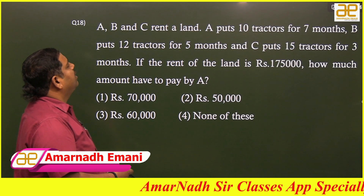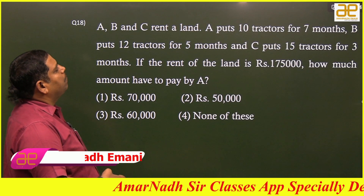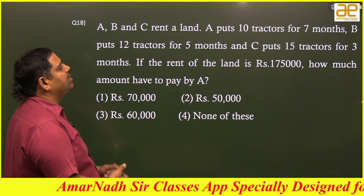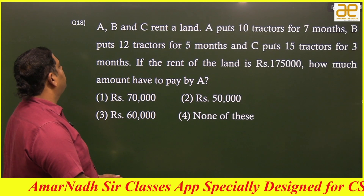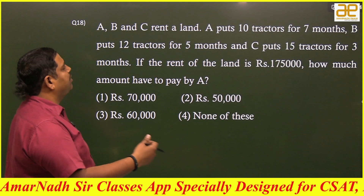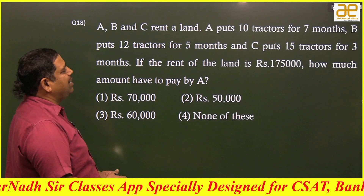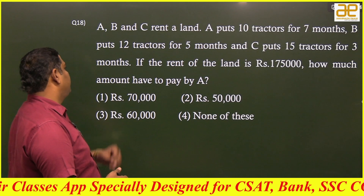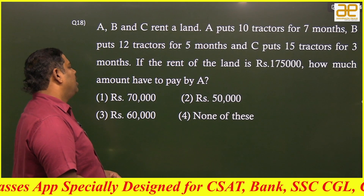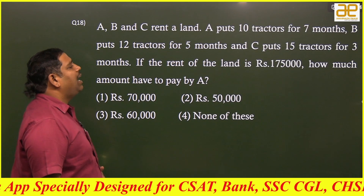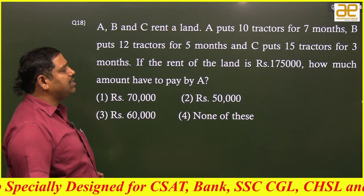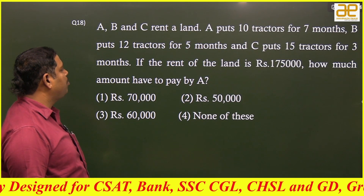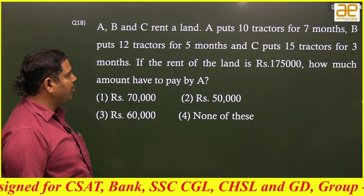A, B and C rent a land. A puts 10 tractors for 7 months, B puts 12 tractors for 5 months and C puts 15 tractors for 3 months. If the rent of the land is 1,75,000, how much amount does A have to pay?